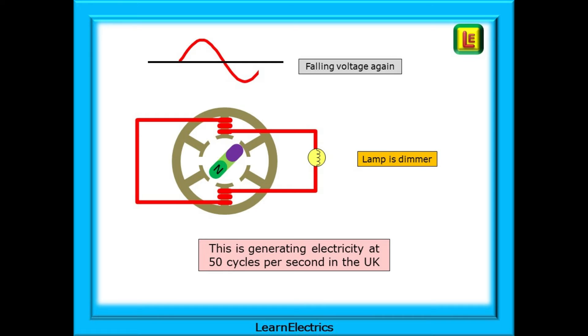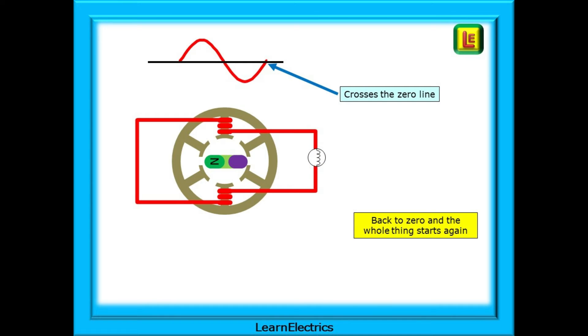The rotor rotates some more and the voltage starts to reduce again and the lamp becomes dimmer. All this is generating electricity of 50 cycles per second in the UK and parts of Europe, but it could just as easily be 60 hertz in North America. Because of the frequency, we do not see the lamp glowing and dimming. Our eyes just see one bright light. The rotor has completed one cycle. The voltage has reduced to zero as you can see at the top of the drawing, and now the whole thing starts again.